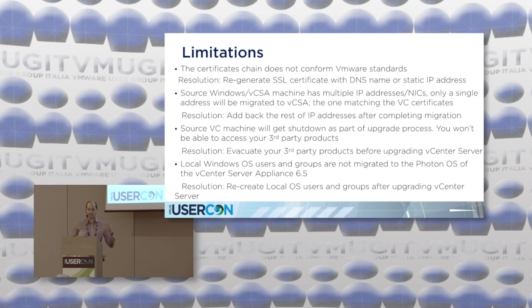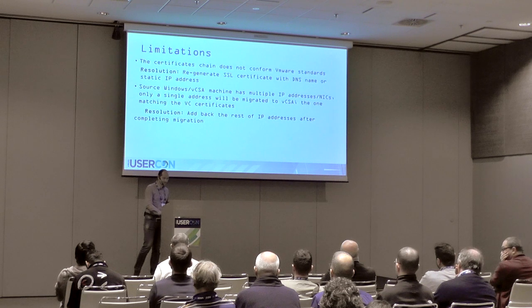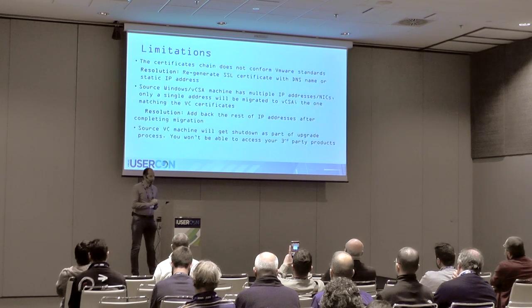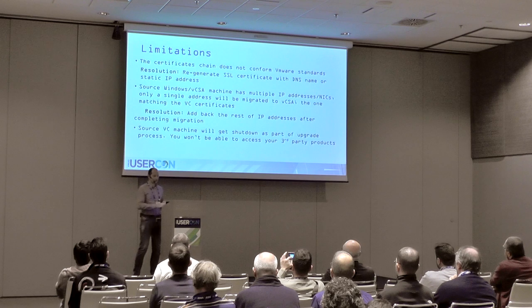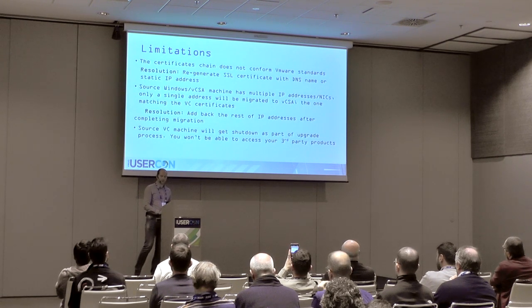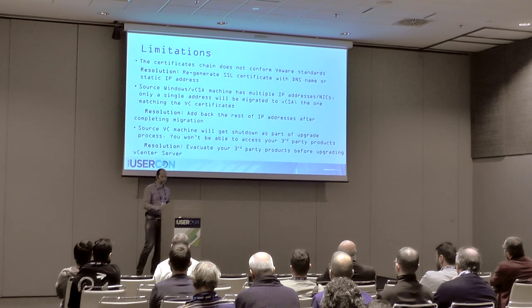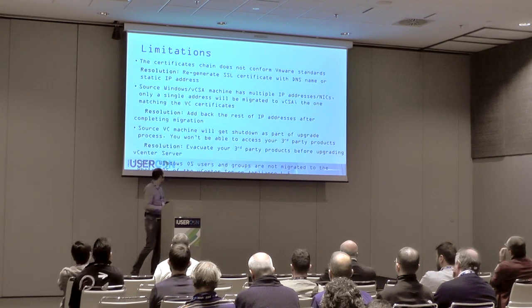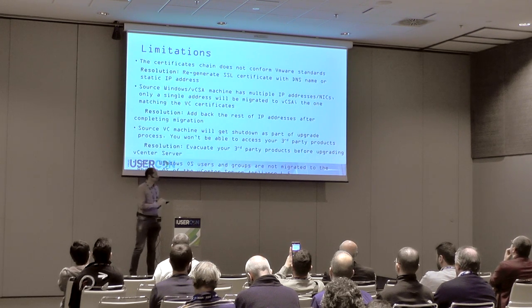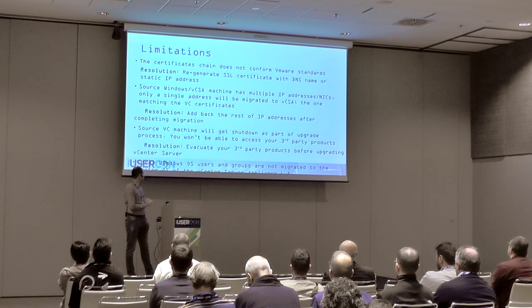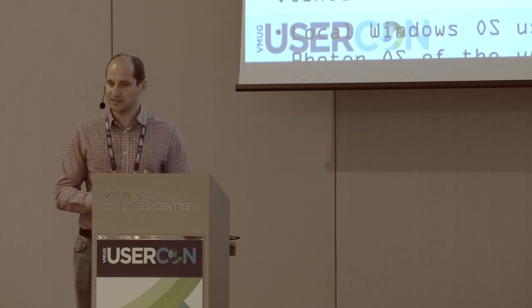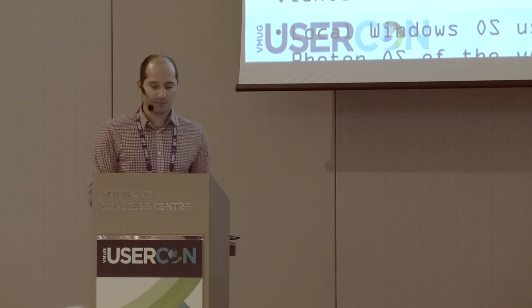If you want to be part of different subnets after upgrade, you need to add those additional IP addresses back after the vCenter Server migration. Another limitation is that when the source vCenter Server is shut down, you won't be able to access applications running on that Windows box — so evacuate them before the upgrade. Also, local OS users are not migrated during the upgrade — this is true for both appliance upgrade and Windows migration. You have two options: add users back after successful upgrade, or use AD users, which is the recommended approach.